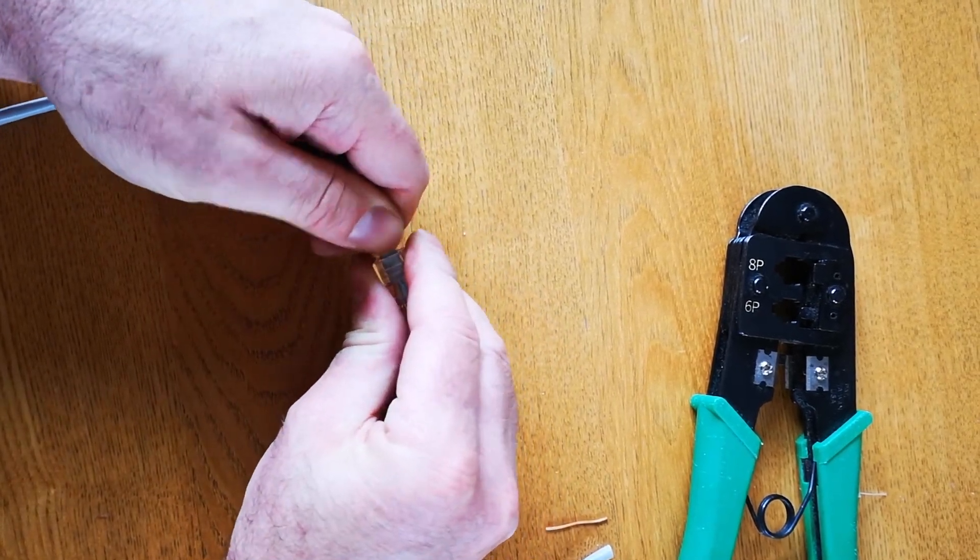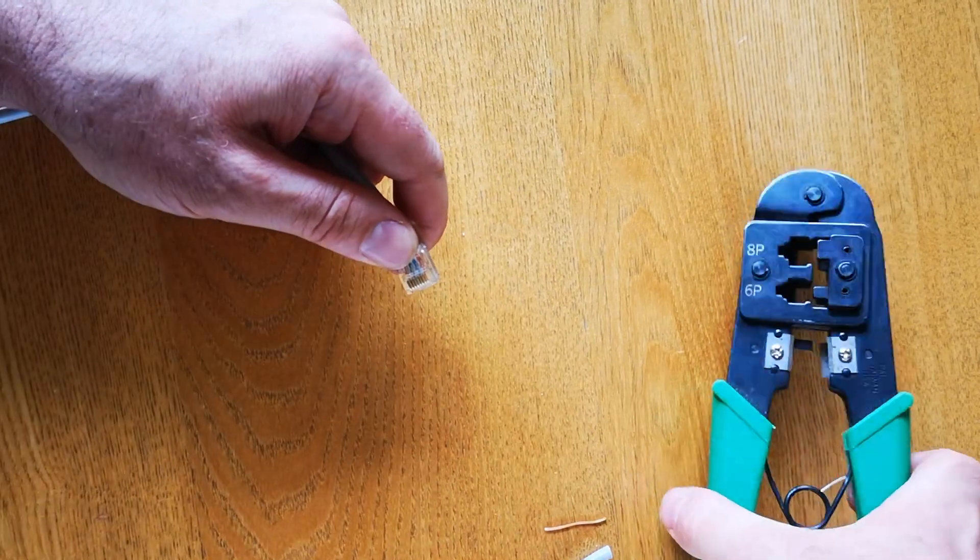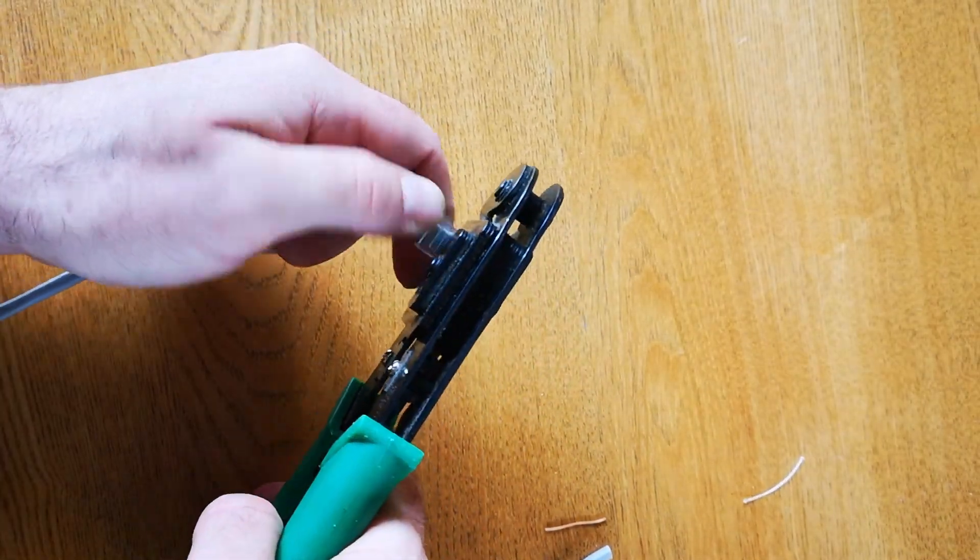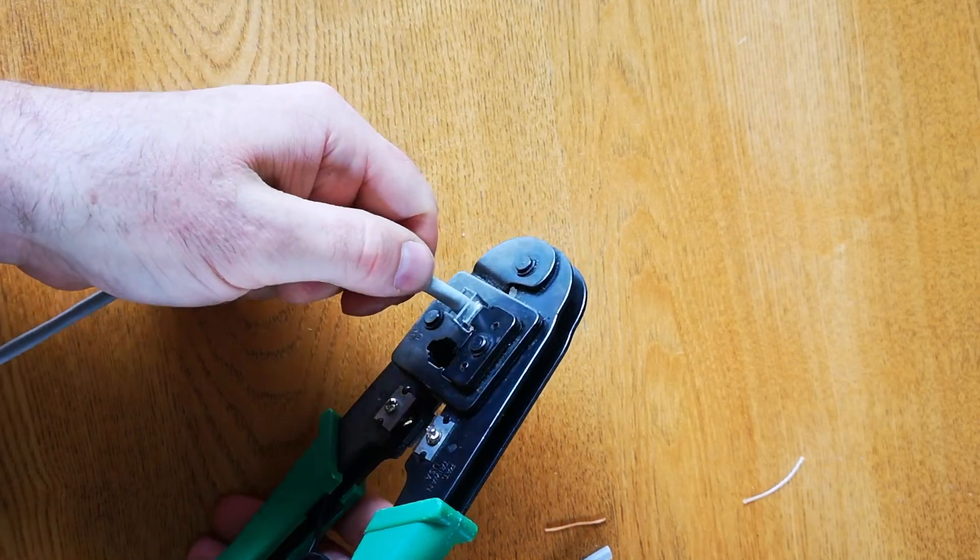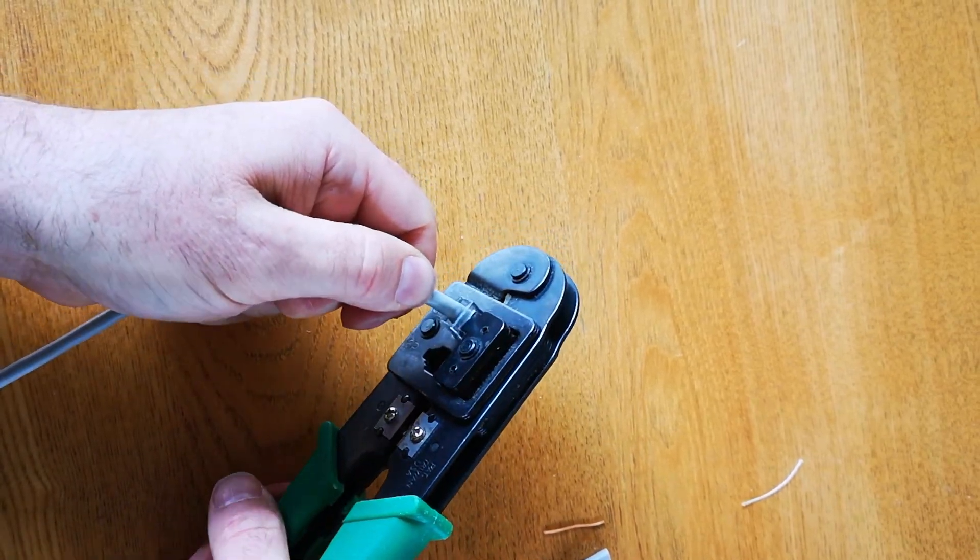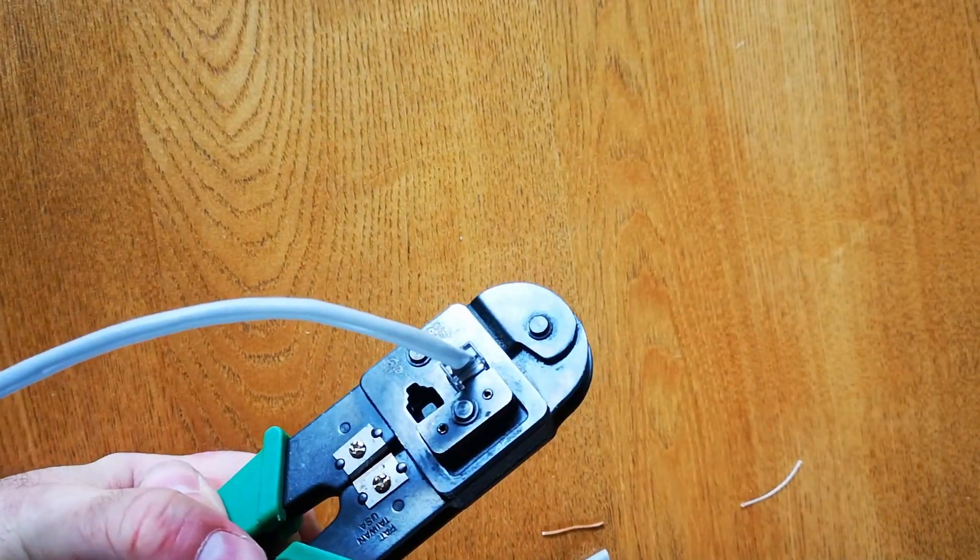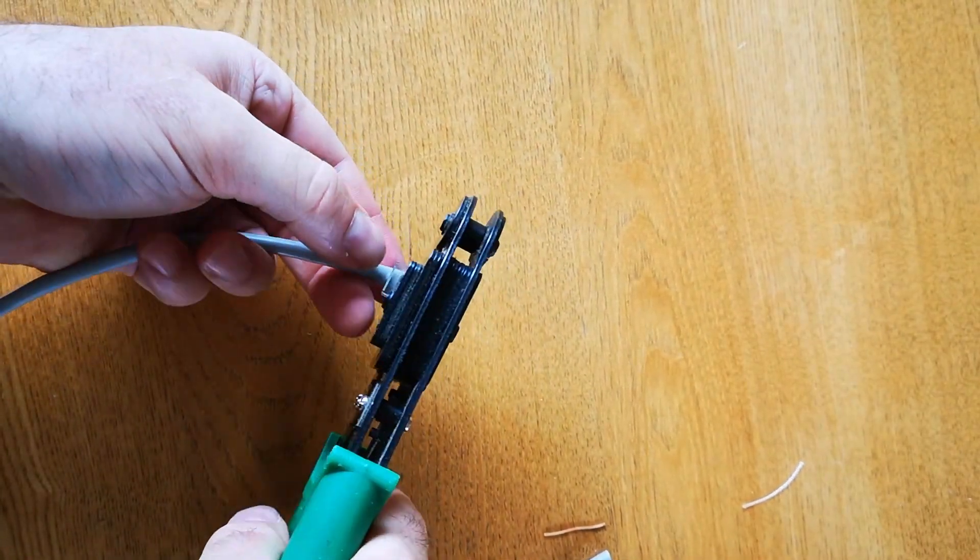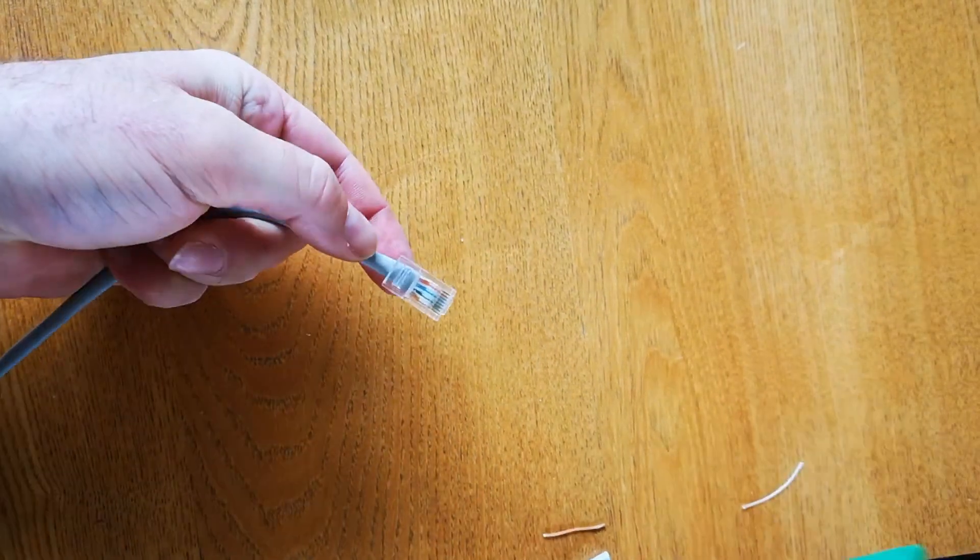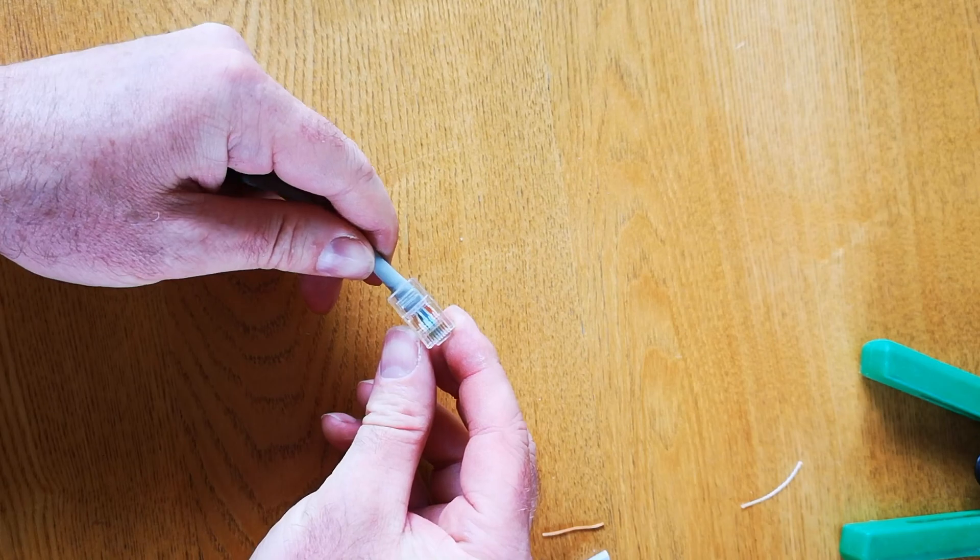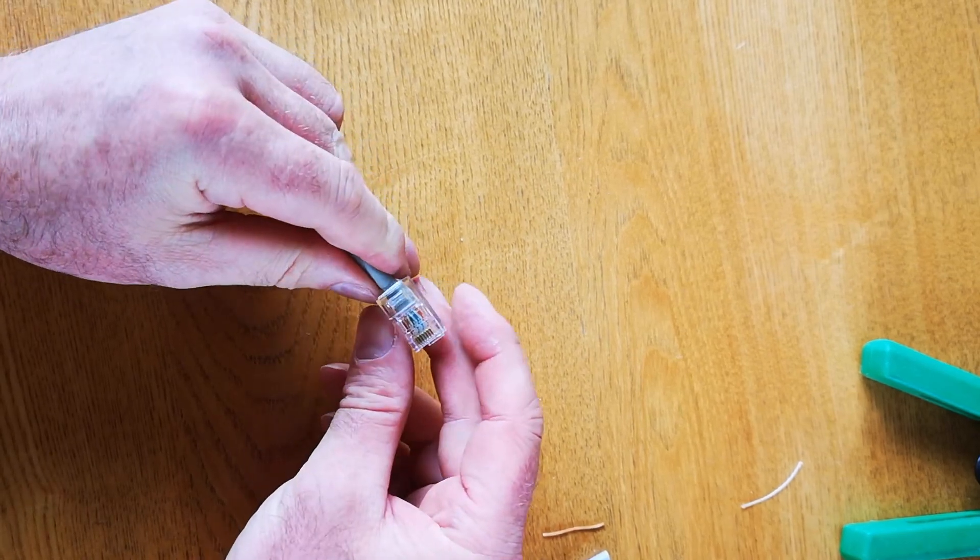So keep that pushed in, wiggle it in to the end. Pick up your RJ45 crimping tool, plug it into the 8 pin socket and press the handles together until they touch and they don't go anymore. And then release it and pull this out of the tool. And that is one RJ45 connector crimped on.